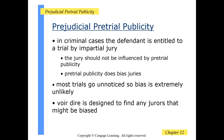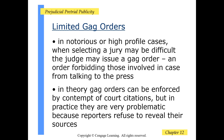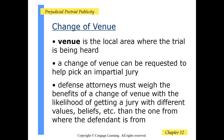Voir dire is designed to find any jurors that might be biased. In notorious or high-profile cases, jury selection may be difficult, and the judge may issue a gag order — an order forbidding those involved from talking to the press. Gag orders can be enforced by contempt of court citation, but in practice they are very problematic because reporters refuse to reveal their sources. Sometimes a change of venue is needed. Defense attorneys must weigh the benefits of a change of venue with the likelihood of getting a jury with different values and beliefs than those from where the defendant is from.